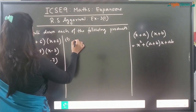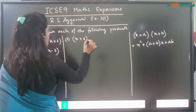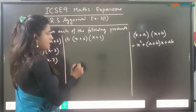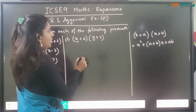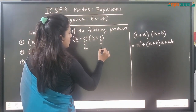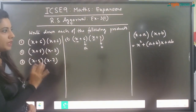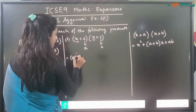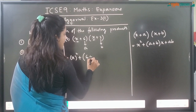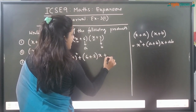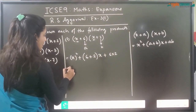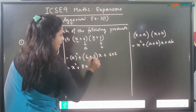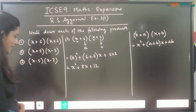Question number 1: (x + 6)(x + 2). When you compare this with the formula, your x is x, a is 6, and b is 2. Just put these values in the formula: x² + (a + b)x + ab = x² + (6 + 2)x + 12 = x² + 8x + 12. This is the answer.